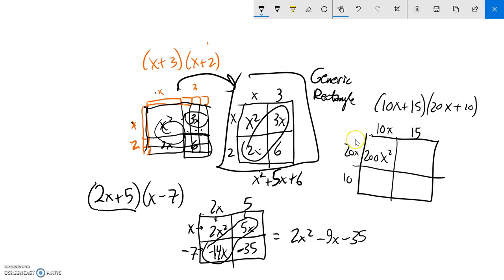15 times 20x. 15 times 20. I could use a calculator. I could just know it. 300x. Maybe I'll use a calculator. 15 times 20. I was right. 300x. And then this bottom left part here, 10x times 10, that'd be 100x. And then here, 10 times 15, 150.